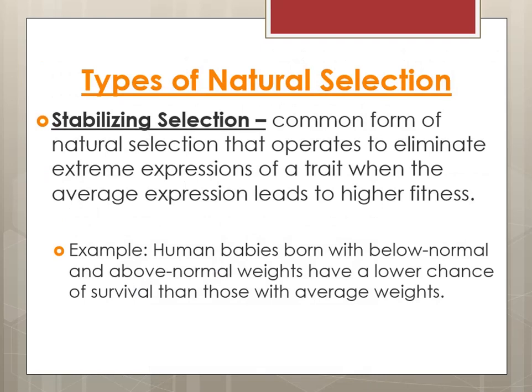Going back to natural selection, there are different types. The first is stabilizing selection, the most common form, which operates to eliminate the extreme expressions of a trait when the average expression leads to higher fitness. The example from the book talks about human baby weights — babies born with below-normal or above-normal weights have a lower chance of survival than those in the average category. So stabilizing selection eliminates the extremes in favor of the average, because the average has higher chances of success.